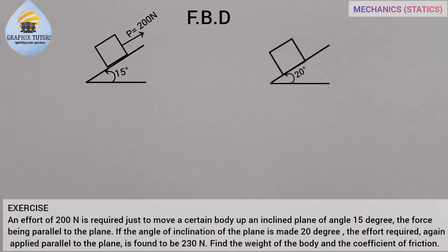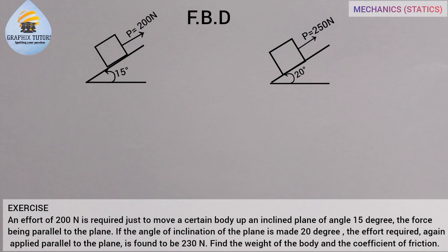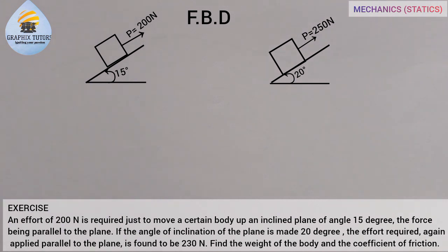For the second case, the same object is pulled up an inclined plane with an increased effort toward 250 Newton, because the angle of inclination has been increased. One thing you need to understand is that the steeper an inclined plane, the more difficult it is to move an object up it. So the more we increase the angle of inclination, the more effort is required to pull an object up the inclined plane.